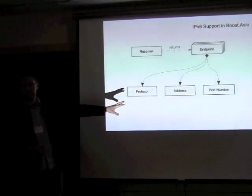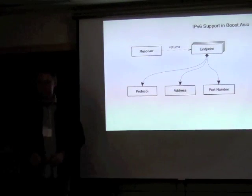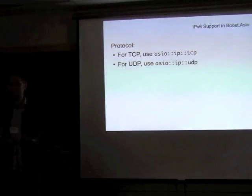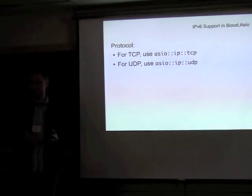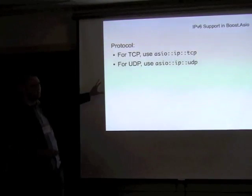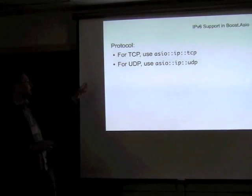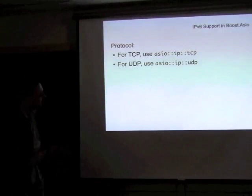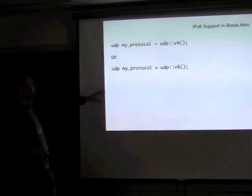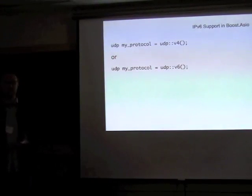An endpoint is composed of three things: the protocol (meaning IPv4 or IPv6), the address, and the 16-bit port number. The protocol class in ASIO is a concept; there are actually two concepts — protocol and internet protocol. The classes that implement the internet protocol concept are TCP and UDP. They are value type objects that only really have two possible values: one representing IPv4 and one representing IPv6.